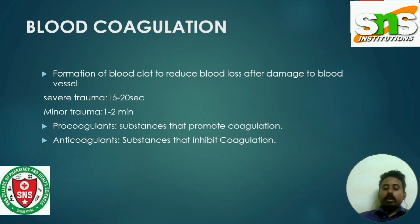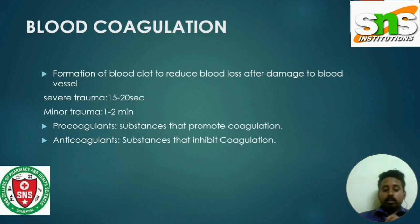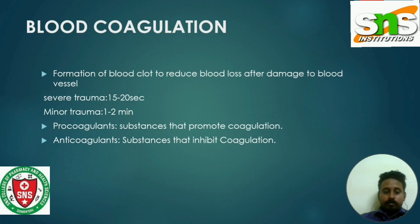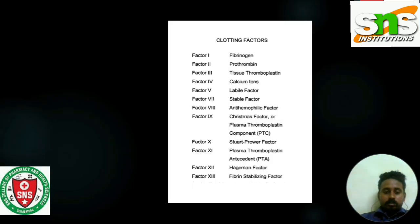Blood coagulation is a hemostatic mechanism involving a series of chemical processes that result in the formation of fibrin threads in which blood cells are trapped. Now these are the types of clotting factors which are present in our body.